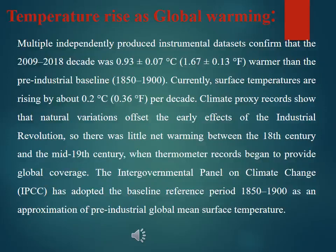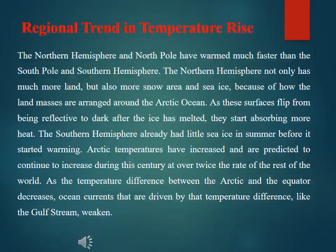Currently surface temperatures are rising by about 0.2 degrees Celsius or 0.36 degrees Fahrenheit per decade. Climate proxy records show that natural variation offset the early effects of the industrial revolution, so there was little net warming between the 18th century and the mid-19th century, when thermometer records began to provide global coverage. The IPCC has adopted the baseline reference period 1850 to 1900 as an approximation of pre-industrial global mean surface temperature.